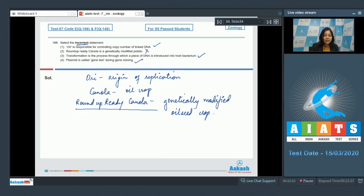Number four, 'Plasmid is called gene taxi during gene cloning.' This is also a correct statement, as plasmid acts as a vector and carries the alien gene, thus it is called gene taxi. So the correct answer is option number two. Proceeding to the next question, question number 169.